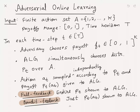As input we receive a finite action set A — for the purpose of this series let's call them one through K. You're also given a payoff range, which we assume lies between zero and one, and a time horizon T. All these things are known a priori before the start.